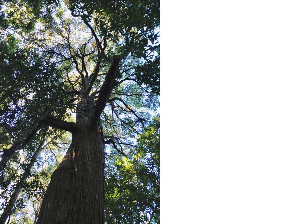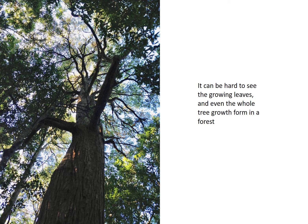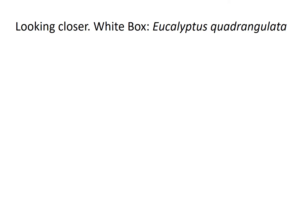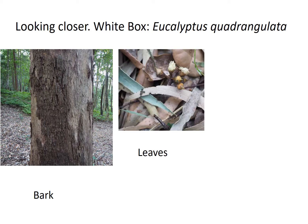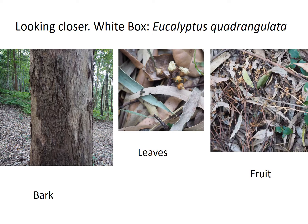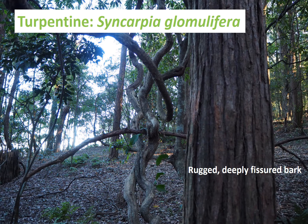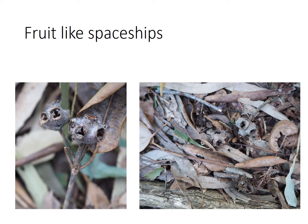It can be quite hard to actually see the growing leaves up on these trees when they're very tall, so we like to look at clues for identifying tree species. Looking at the white box, we have bark which is light and crumbly, the leaves are very slender, and the fruit is quite delicate — if you get a reference book you'll see the particular shape and can confirm the species. Looking at turpentine — that's not a eucalypt, as you can see from the genus, it's Syncarpia. It has a very rugged, deeply fissured bark, and its fruit are really unusual looking — they look a bit like spaceships.